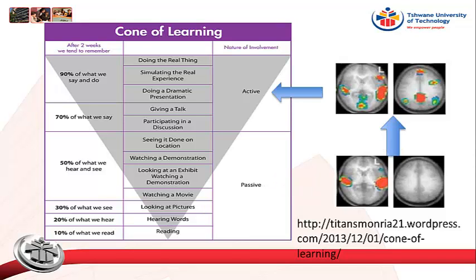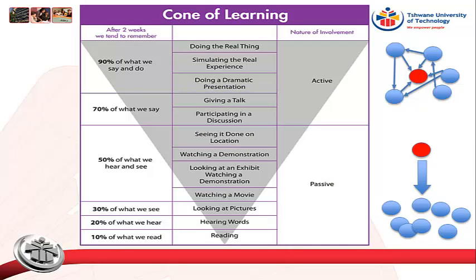On the right you can see that passive student involvement is usually characterized by one-way communication. The lecturer talks and the students listen, or the lecturer demonstrates and the students observe. Active student involvement on the other hand means that the students are actively involved — they participate in the classroom experience. So given Dale's cone of learning, how should an ideal classroom experience be structured? How do we design for active learning?